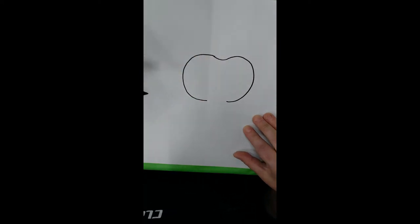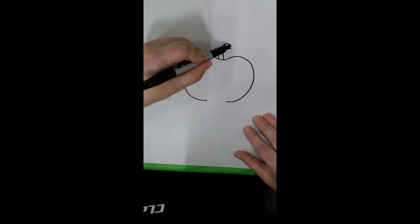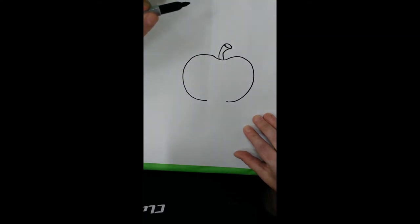Then we'll draw two lines on top, a little bit curved, to start out on our little stem of the pumpkin. This one's a little bit more crooked. And then at the top of those two lines we'll draw a little circle, and that looks like it's our little stem for our pumpkin.